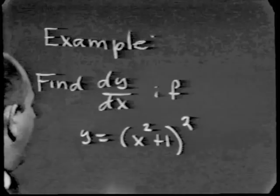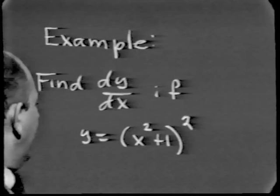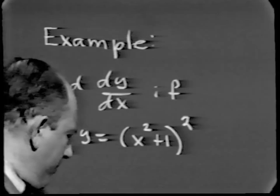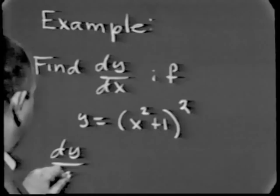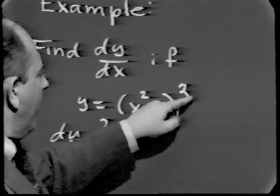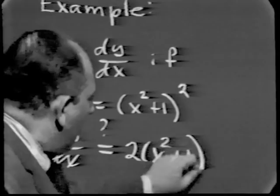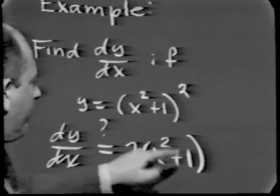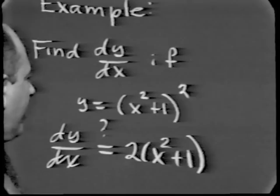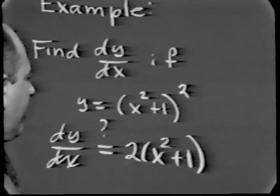Suppose we want to find dy/dx if y equals (x² + 1)². Let me first do this the wrong way. People learn: bring the exponent down and replace it by one less. If I bring the exponent down here and replace it by one less, I get a certain answer. But is this the right answer? One very nice way to find out whether an answer is wrong is to first find the right answer by another method.